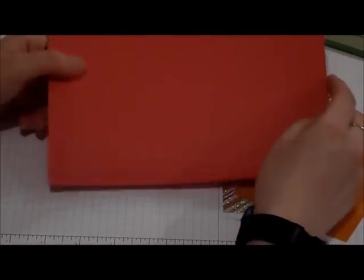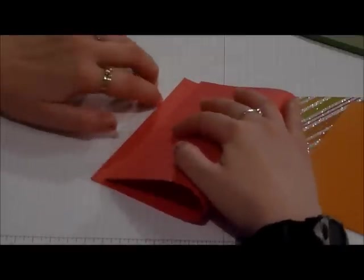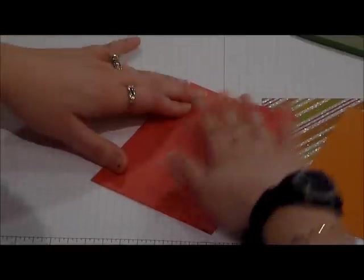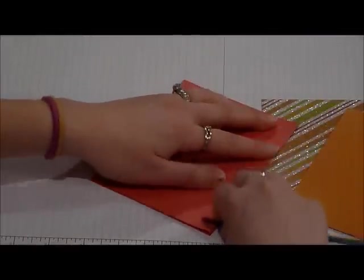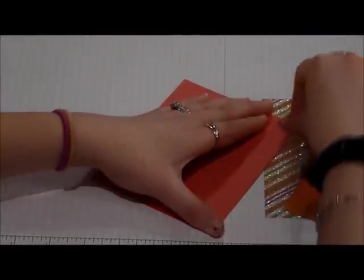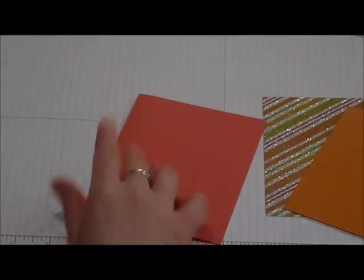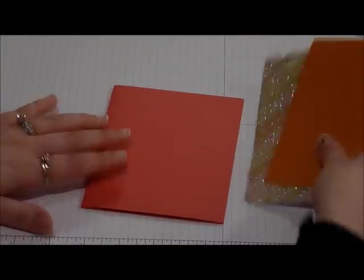This is an 8.5 by 5.5 piece of Melon Mambo by Stampin' Up. We're going to fold it in half so we'll have 5.5 by 4.25. My bone folder is in a bag upstairs. I just went to a workshop with my demonstrator, so that's upstairs, that's why I'm using that one.